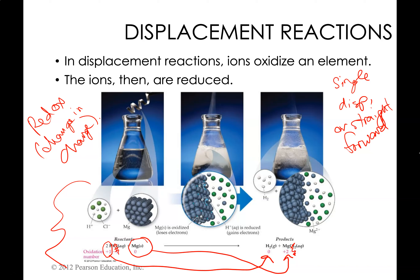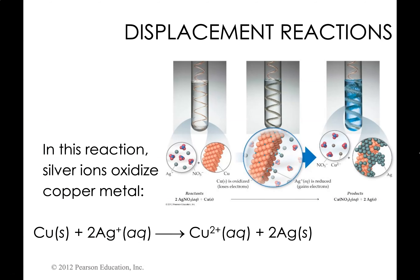In the Mg/HCl reaction, the hydrogen atom went from plus one to zero — it gained electrons. The magnesium went from zero to plus two — it lost electrons. Using OIL RIG: oxidation is loss and reduction is gain. So the hydrogen gaining electrons is the reduction, and the magnesium losing electrons is the oxidation. Chlorine did not change charge, so we don't need to worry about it.